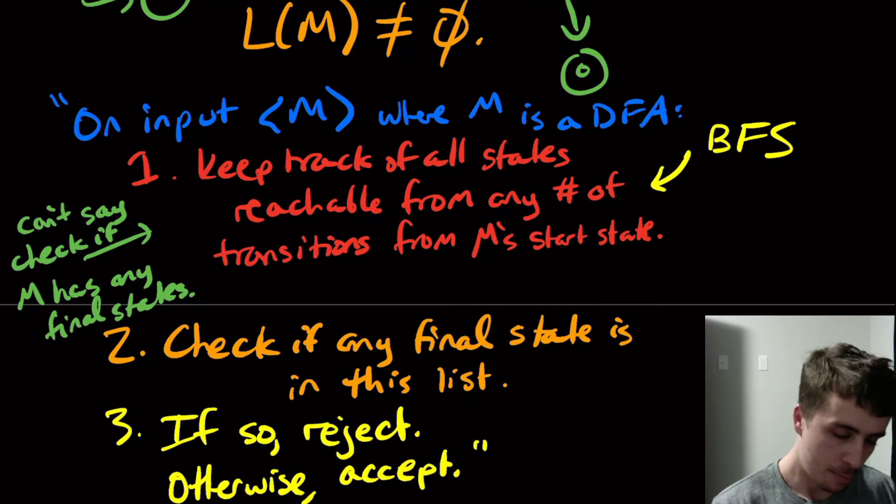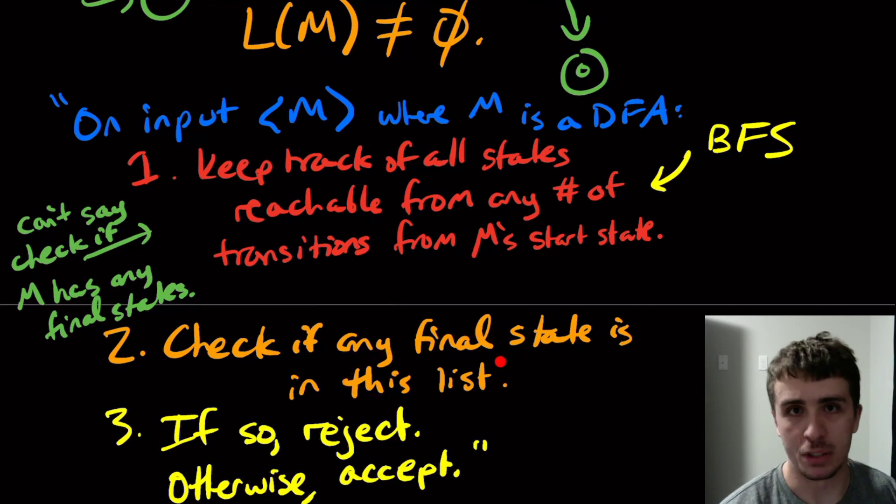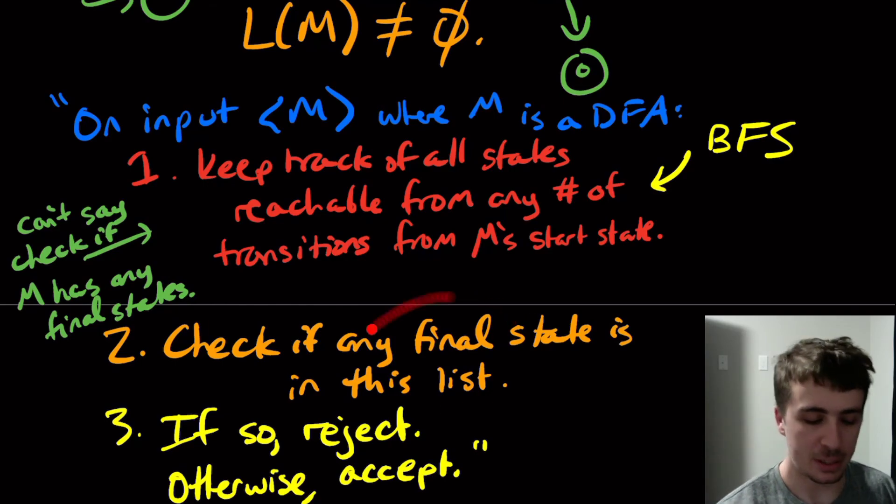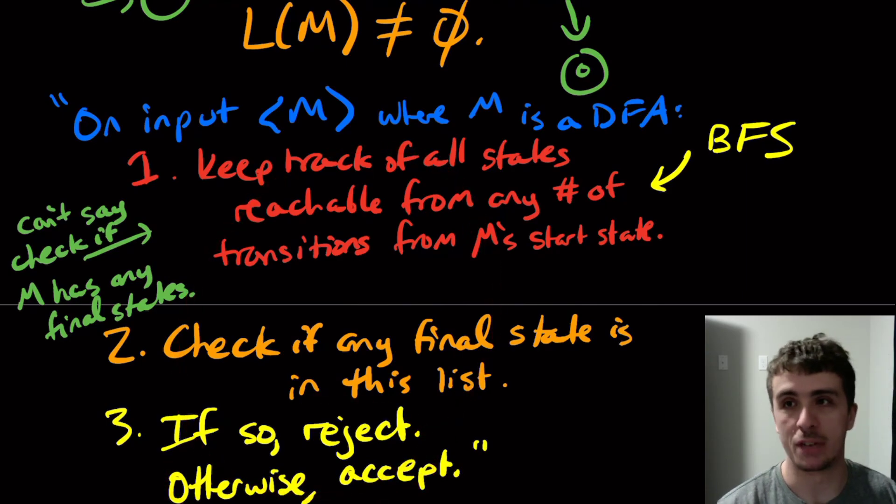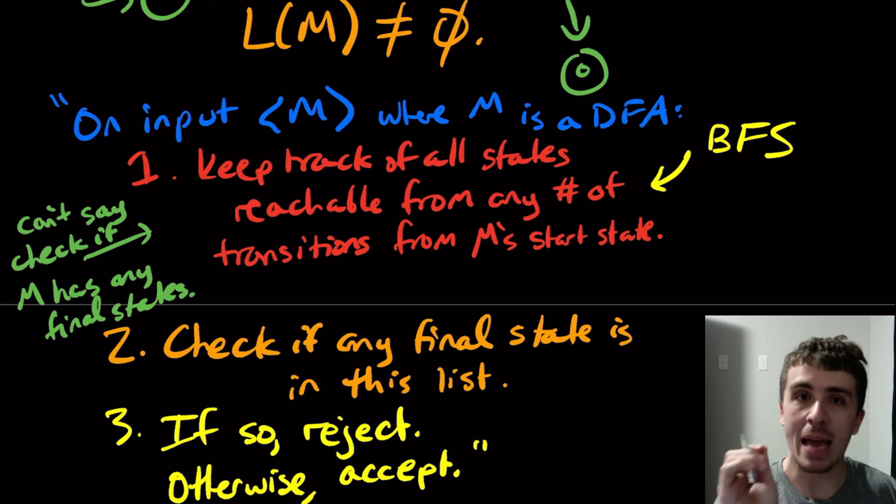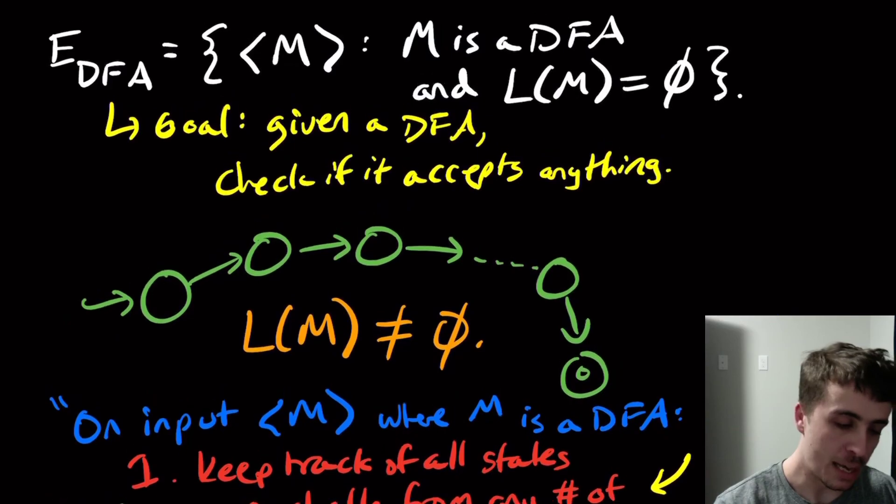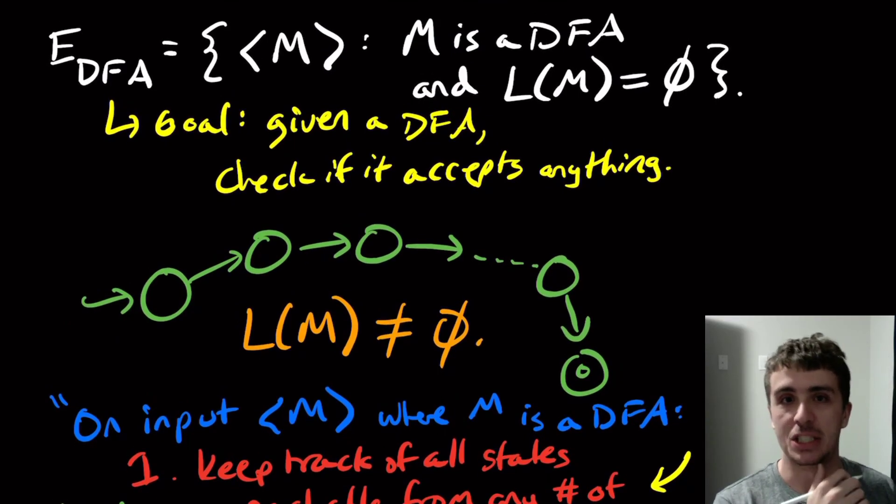But of course, this step takes a finite amount of time, because there's only a finite number of states in that list. And so we would just need to check if any of them is in the final states, which again, is a finite set. So that's easily done in finite time. This one's done in finite time, obviously. So the whole thing runs in a finite amount of time. Note, we had to do the exact opposite answer. But that allows us to show that E_DFA is in fact decidable.